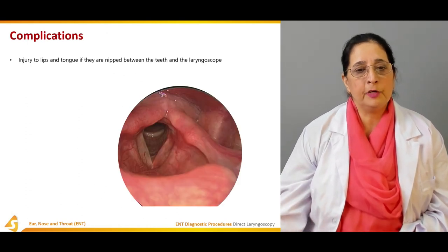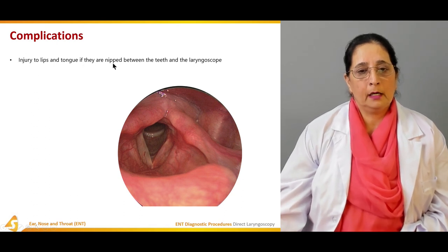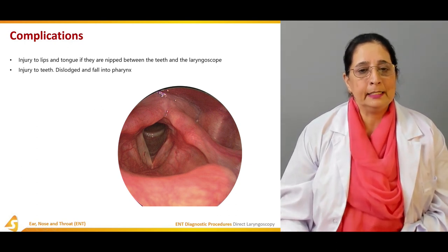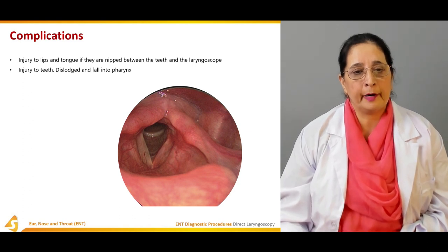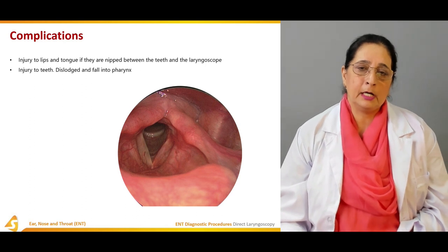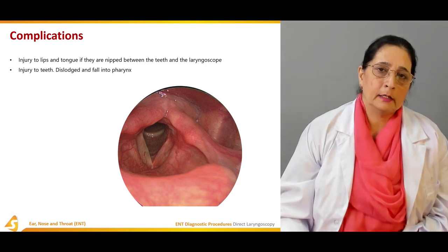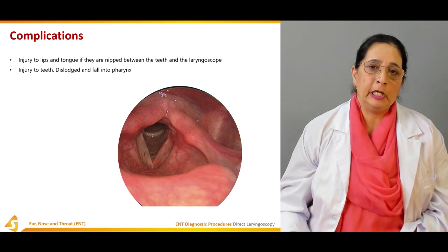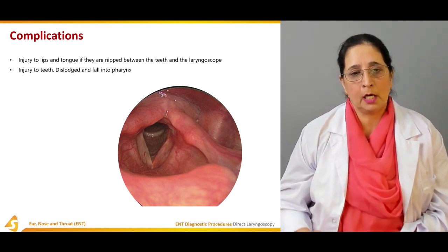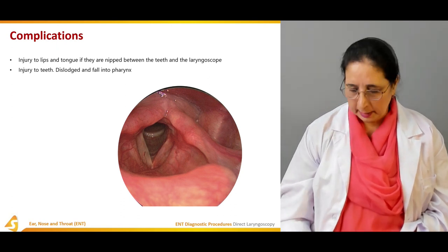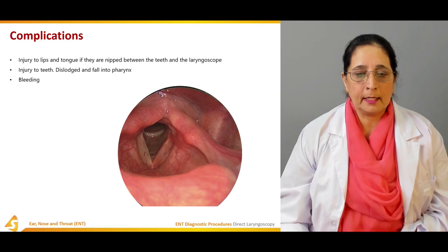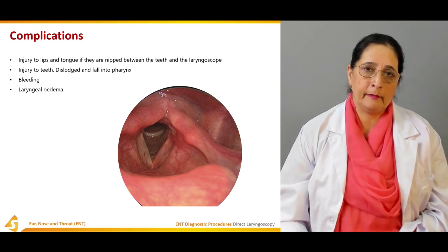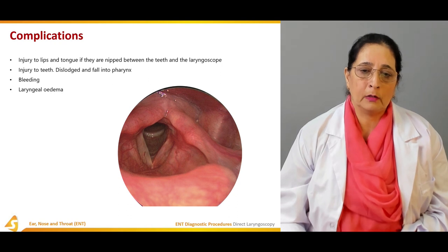Complications include: injury to the lips and tongue if they are nipped between the teeth and laryngoscope; injury to teeth — dislodged teeth or dentures can fall into the pharynx and should be removed before the procedure. Bleeding can also occur as a complication, and laryngeal edema — swelling of the larynx due to handling by the laryngoscope — can also occur.